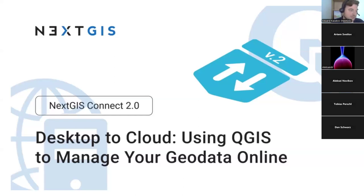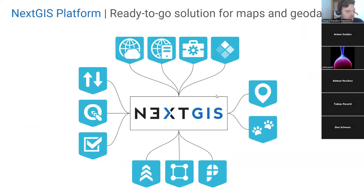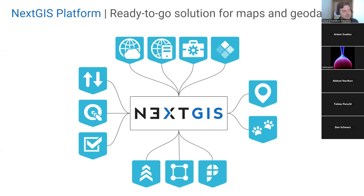Before we proceed to Connect itself, I would like to introduce our team, NextGIS. The most organic way to speak about our company is to tell that we produce ready-to-go solutions for apps and geodata. Our main idea is the NextGIS platform, which covers all basic workflows related to geospatial data — from collecting and storing in the web, to analysis, reports, and all other stuff.